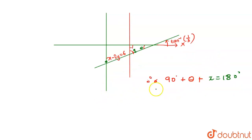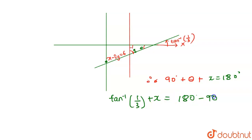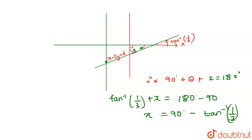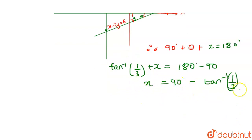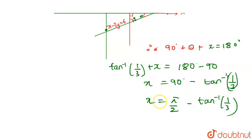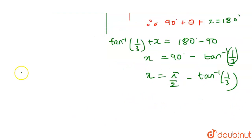We know θ = tan⁻¹(1/3), so: tan⁻¹(1/3) + x = 180° - 90° = 90°. Therefore x = 90° - tan⁻¹(1/3), which can be written as x = π/2 - tan⁻¹(1/3). Now we use an identity.